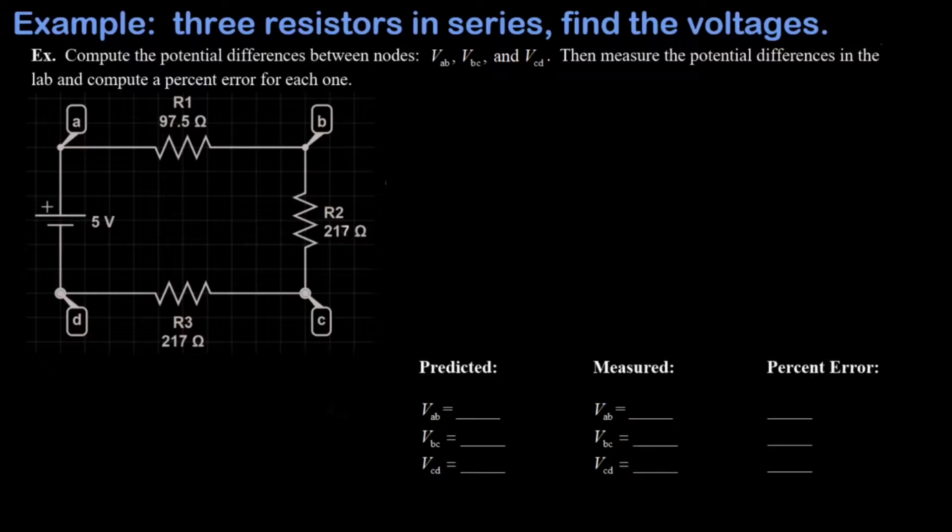So we have a circuit with three resistors in series here and all we're going to do is combine those using the series equivalent formula for three resistors. That's just R1 plus R2 plus R3, and when I plug the numbers into a calculator I get a total resistance of 531.5 ohms.